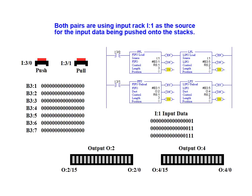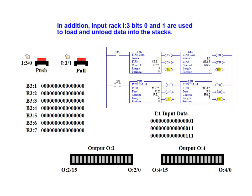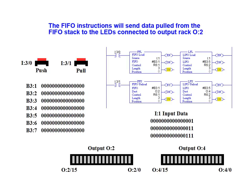Both pairs are using input I:1 as the source for the input data being pushed onto the stacks. In addition, input I:3, bits 0 and 1, are used to load and unload data into the stacks. The FIFO instructions will send data pulled from the FIFO stack to the LEDs connected to output O:2. The LIFO instructions will send data pulled from the LIFO stack to the LEDs connected to output O:4.